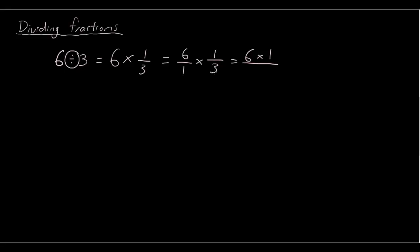and the denominator times the denominator, then it becomes 6/3, which is 6 divided by 3 equals 2.